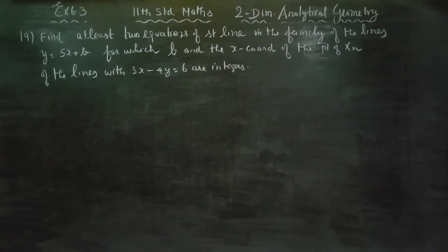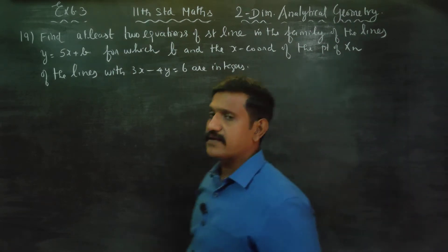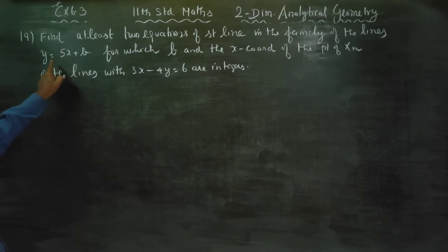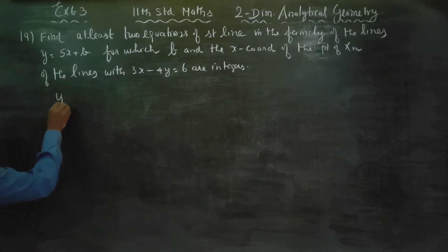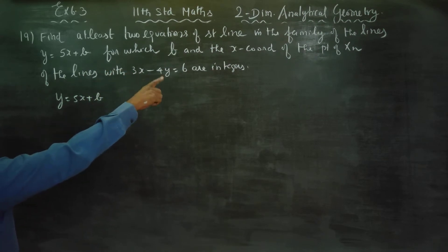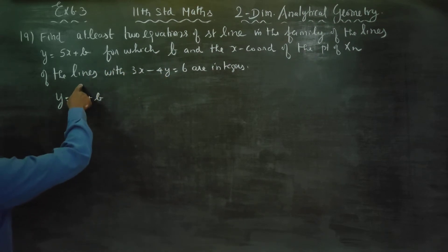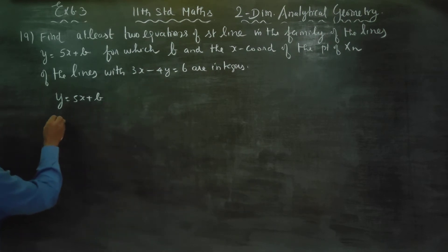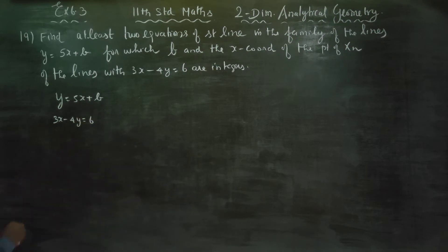Dear 11th standard students, in exercise number 6.3, sum number 19: find at least two equations of a family of straight lines y = 5x + b, for which the x-coordinate of the intersection of the lines with 3x minus 4y = 6 are integers.